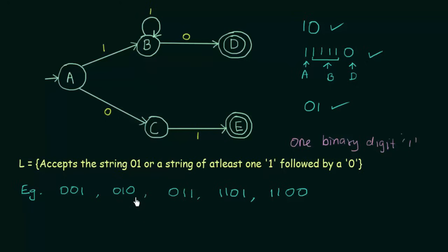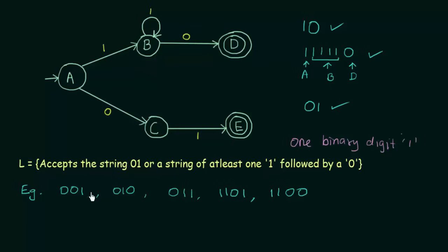Let's check the string '010'. I get a 0 and come to state C. I get a 1 and come to state E. And then I get another 0, and again I don't have a place to go. What about '011'? I get 0, then 1 to state E, and when I get another 1, there is no place to go from here. And for '1101': I get 1 to B, another 1 stays in B, then 0 goes to state D, and I get 1 in state D — again no place to go. Same issue with '1100'. What does this mean? This DFA appears incomplete.